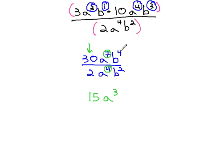Similarly, with the b's, b to the 4th over b squared leaves us with b squared, as we subtract the exponents, 4 minus 2, to get 2.